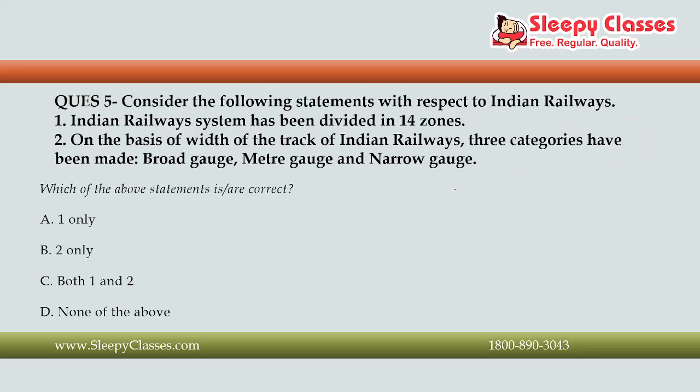The next question asks you to consider the following statements with respect to Indian Railways. First, the Indian Railways system has been divided into 14 zones. Second, on the basis of the width of the track, three categories have been made: broad gauge, meter gauge, and narrow gauge. Which statements are correct? The correct answer is Option B, that is two only. Indian Railways has been divided not into 14, but currently 18 zones. The three track width categories are correct.